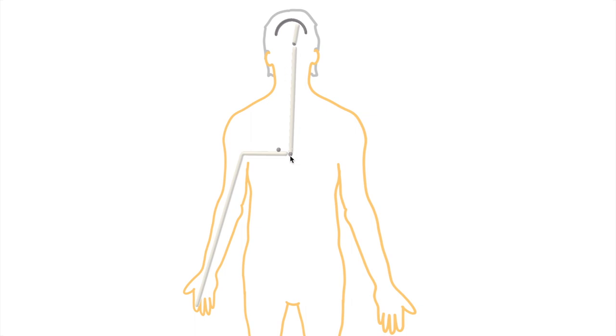The second order neuron conveys the information to the cell body of the third order neuron, which is usually in the thalamus. The third order neuron conveys the info to the sensory cortex.